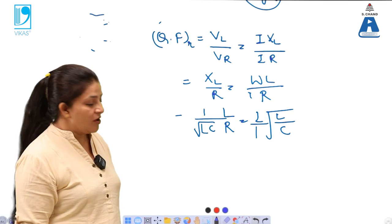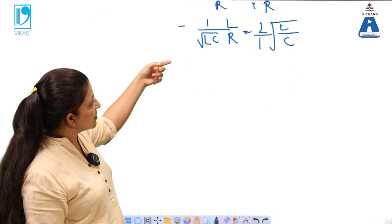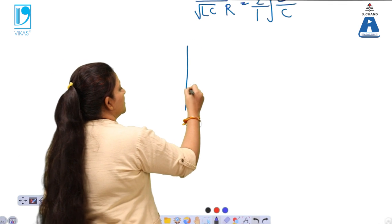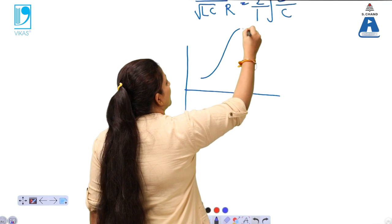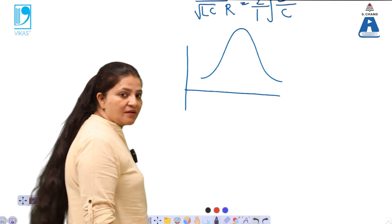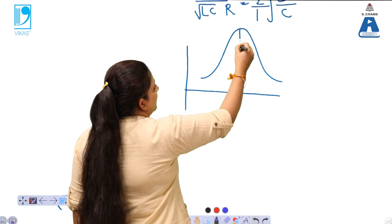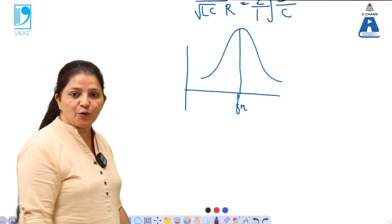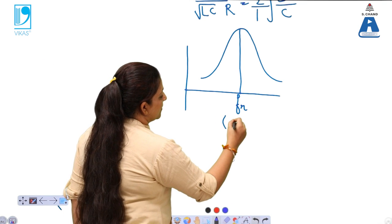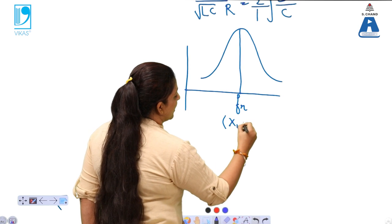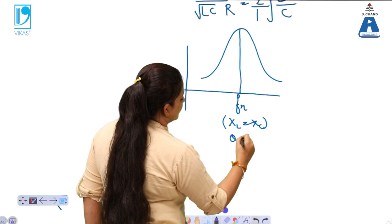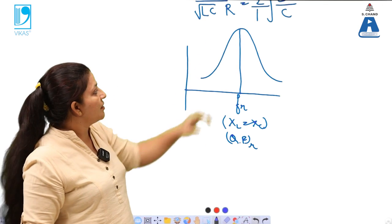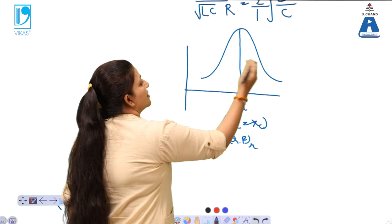Now we want to study the physical significance of the quality factor at resonance. In an AC circuit, FR is the resonance frequency — the frequency at which XL equals XC and the peak value of current is maximum. When we move to the left or right of FR on the frequency curve, the peak value decreases.